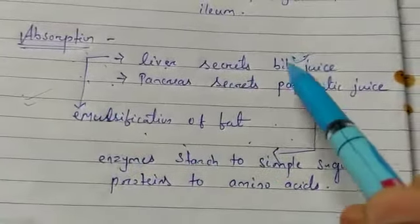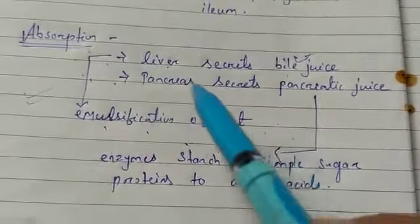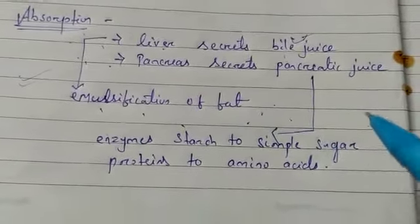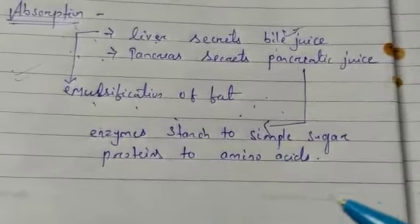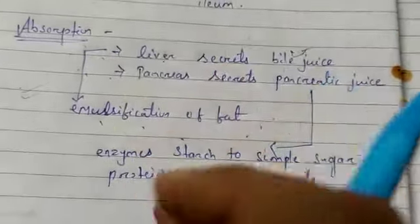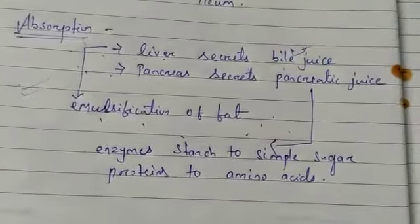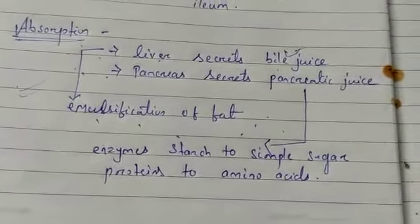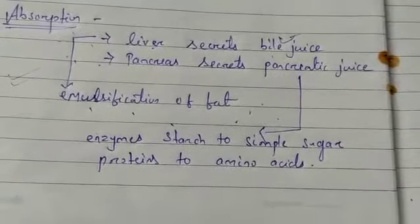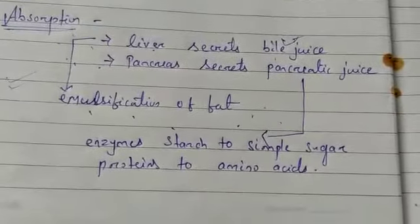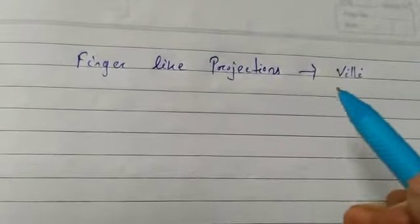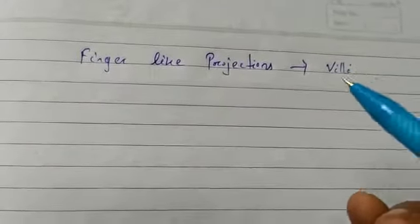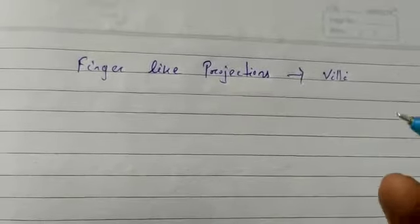It is very important to remember that bile carries out the emulsification of fat — breaking fat into tiny droplets — and pancreatic juice contains enzymes which break down starch into simple sugar and proteins into amino acids. Vitamins and minerals do not get broken down as cells can absorb them easily. In the lower part of the small intestine there are numerous finger-like projections on the wall called villi. They have fine blood capillaries to absorb the food, which then mixes into the bloodstream and is carried to the cells of the body so the cells can utilize it to release energy.